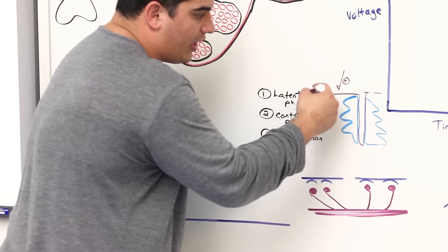So that covers temporal wave summation, the maximal tension concept, and complete versus incomplete tetanus. So far we've talked about the muscle twitch and graded muscle responses with respect to the frequency of neural stimuli. In part two, we'll talk about how the strength of the neural stimulus affects muscle tension, and then finish by discussing motor unit recruitment and the size principle.